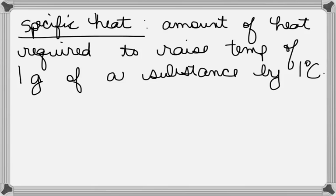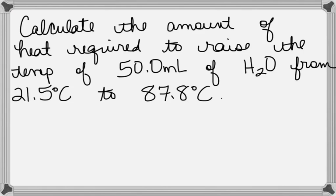Let's do a calculation with the calorimetry formula. Calculate the amount of heat required to raise the temperature of 50 milliliters of water from 21.5 degrees Celsius to 87.8 degrees Celsius. So we know our formula for calorimetry is Q equals MS delta T. What I would do is line up my variables, and what do I know? What am I looking for?